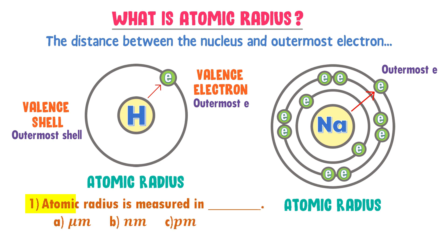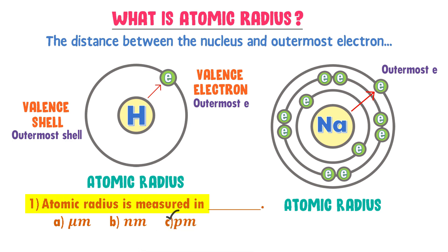Atomic radius is measured in micrometer, nanometer, or picometer. The answer is picometer. Atomic radius is measured in picometer.